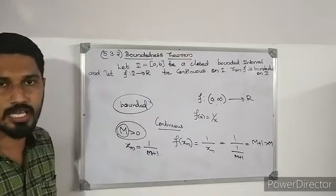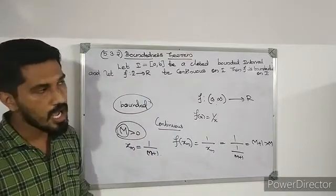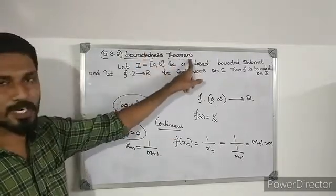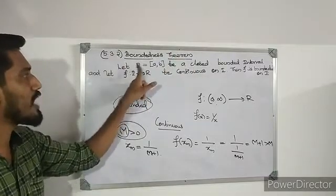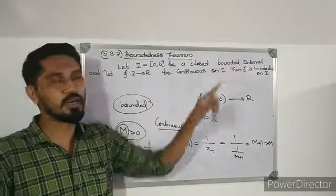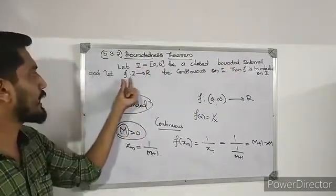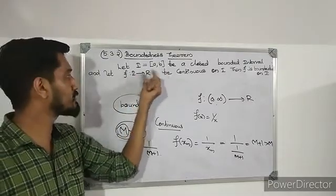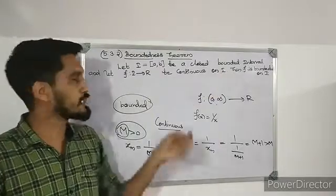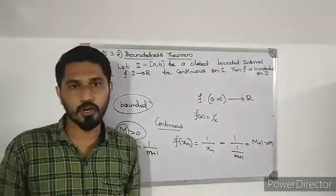We have a conclusion here. So the boundedness theorem states: let I equal the closed interval [a, b], a closed bounded interval, and let f from I to R be a continuous function on I. This is the formal statement of the boundedness theorem.